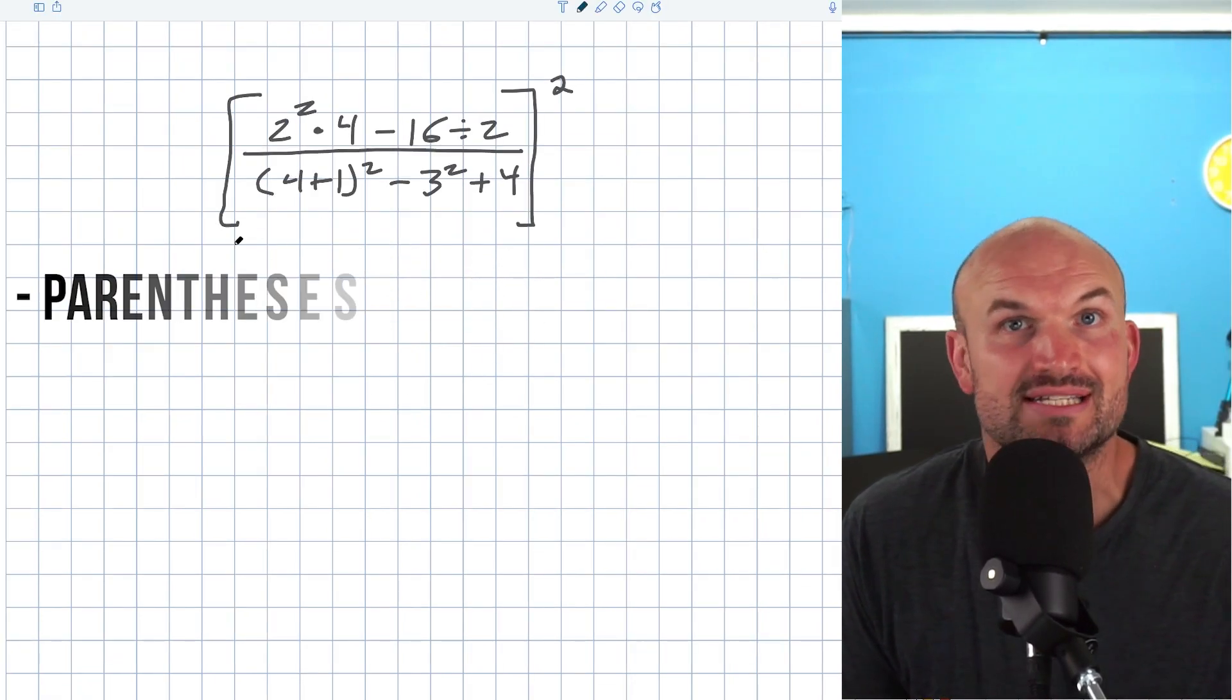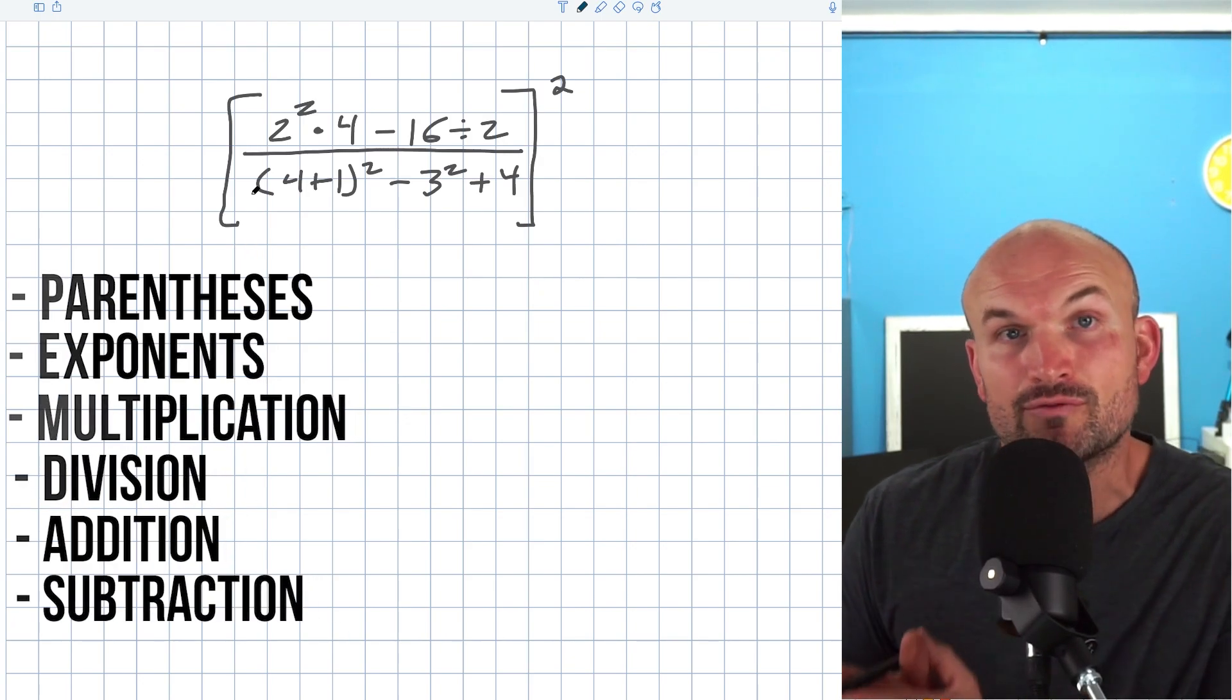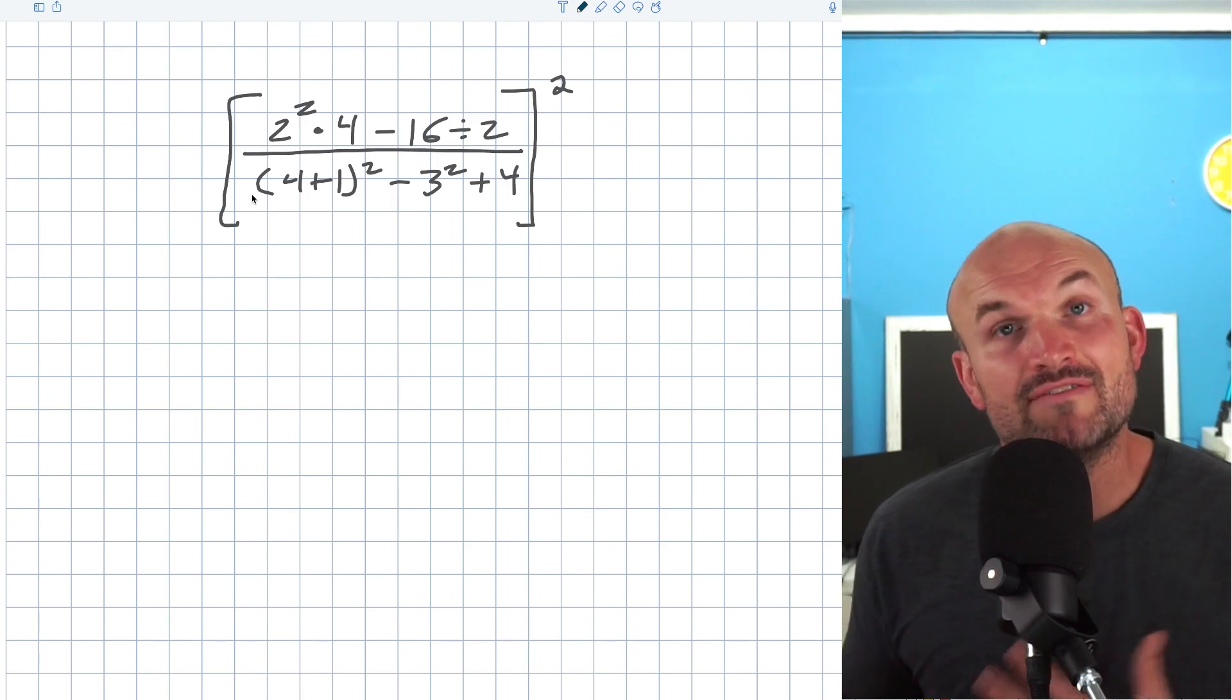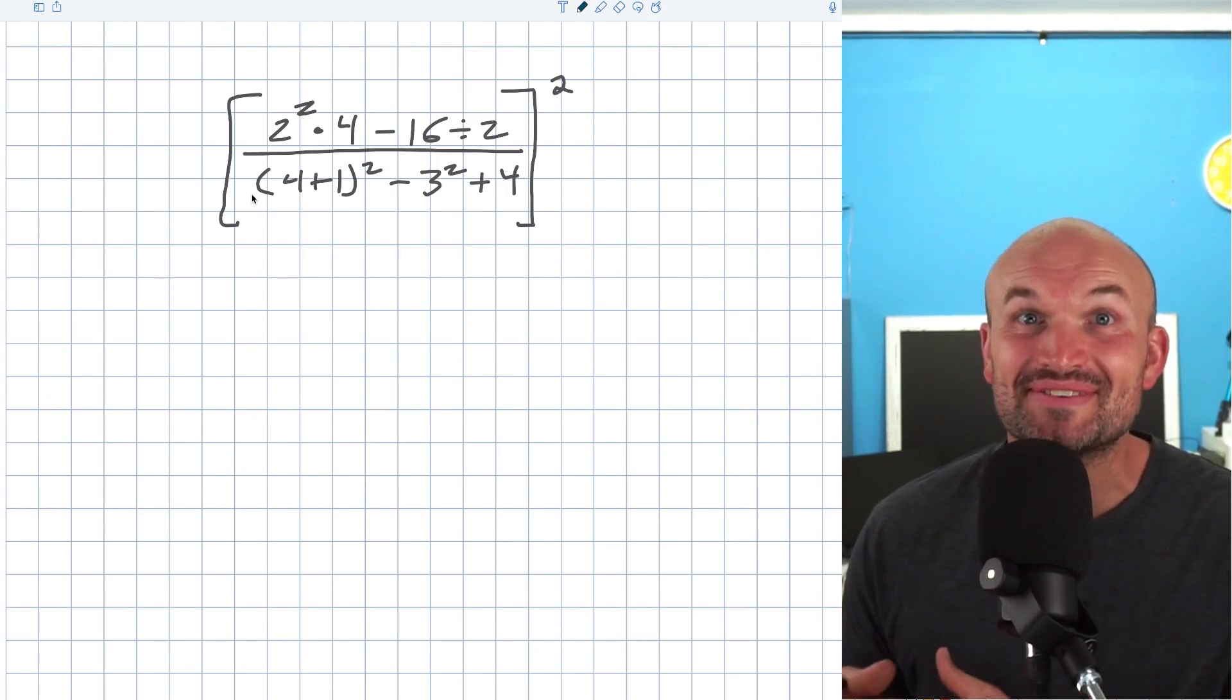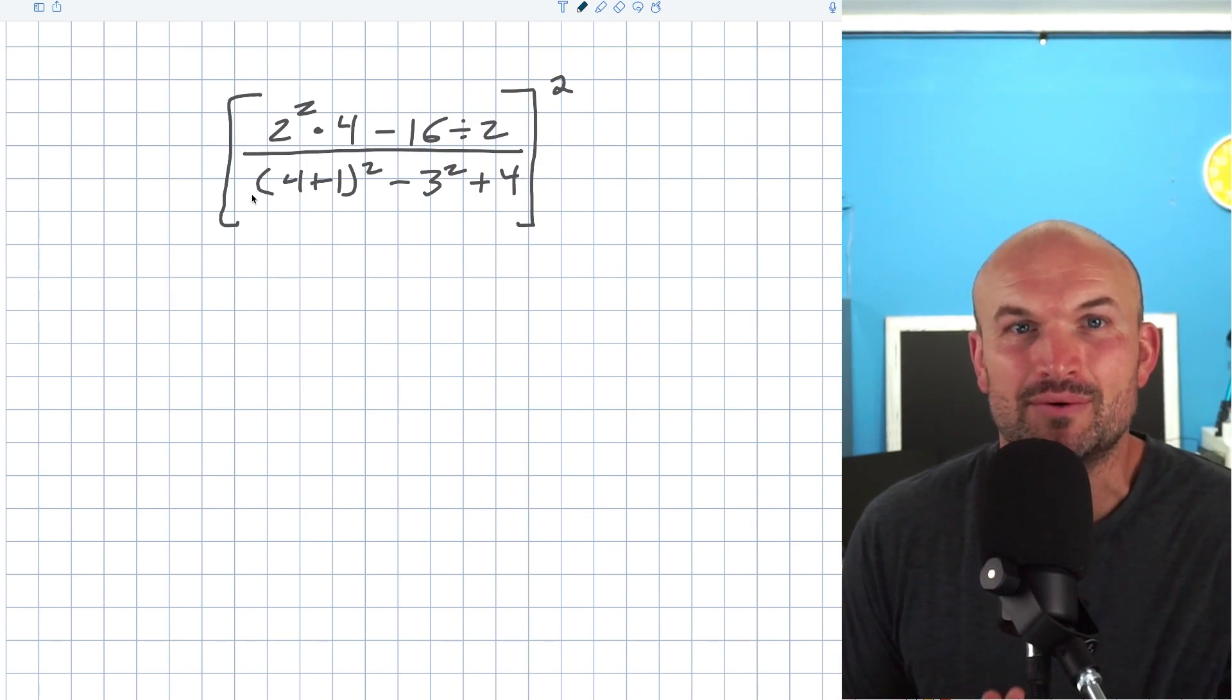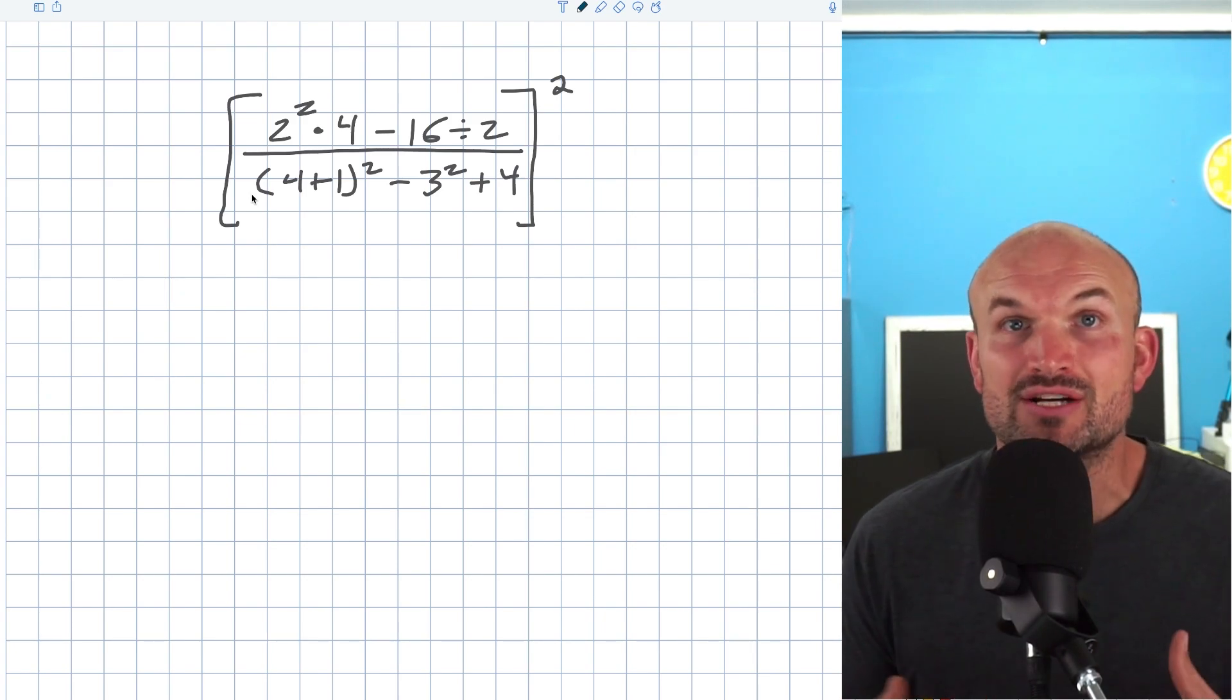If you remember PEMDAS, parentheses, exponents, multiplication, division, addition, and subtraction is a great way to just kind of remember the general idea of how to follow the order of operations to simplify an expression. However, there's definitely some haters for using PEMDAS because it doesn't really give you a full explanation or the context of when and how to use the order of operations. So what I want to do is just kind of highlight some of the key mistakes or key points that we leave out when we are teaching a problem using the order of operations.